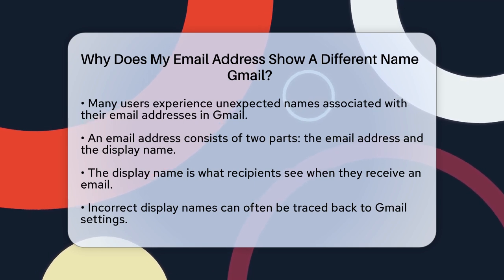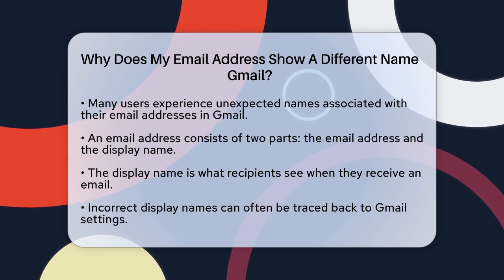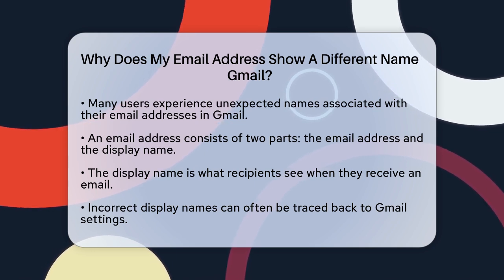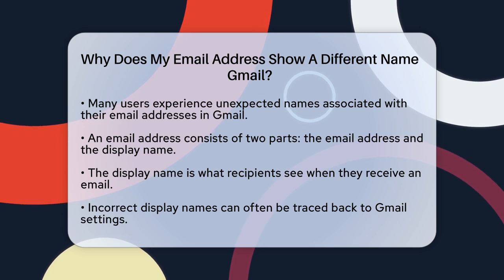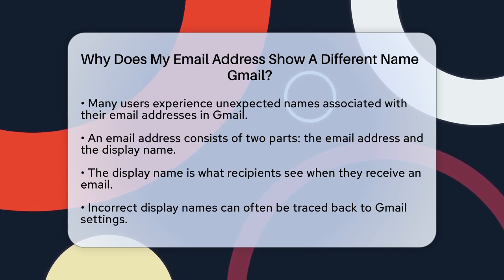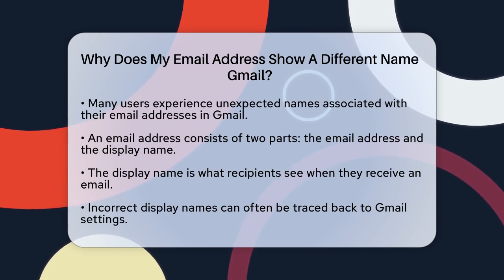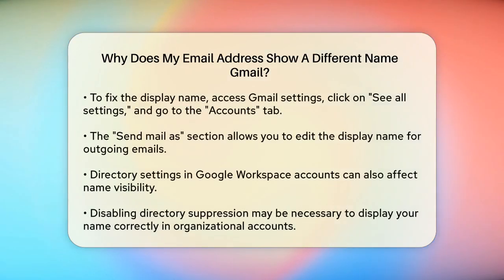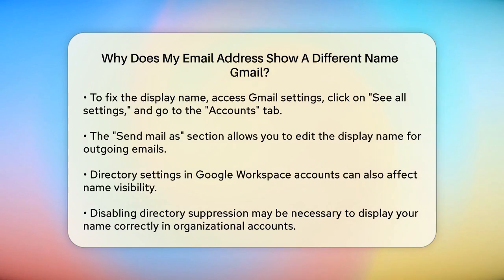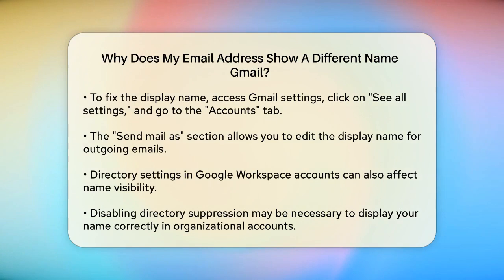One common reason for the wrong name showing up is related to your Gmail settings. Specifically, the Send Mail As setting can cause this issue. To check this, go to your Gmail settings on your computer, click on See All Settings, then navigate to the Accounts tab. Here you'll find the Send Mail As section where you can edit the name that appears when you send emails. If this name is incorrect, updating it here will ensure that your emails show the right name.